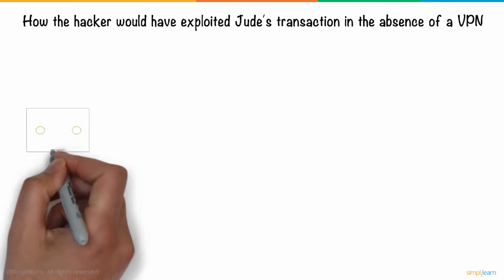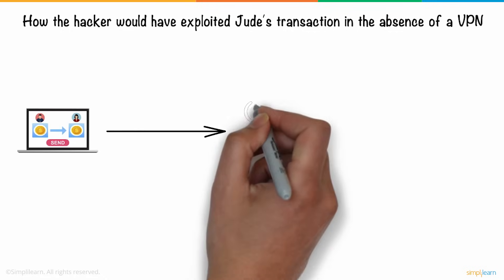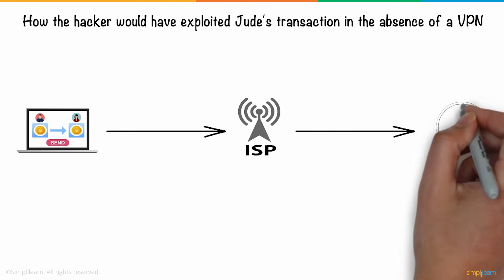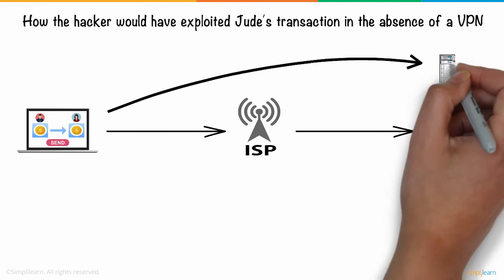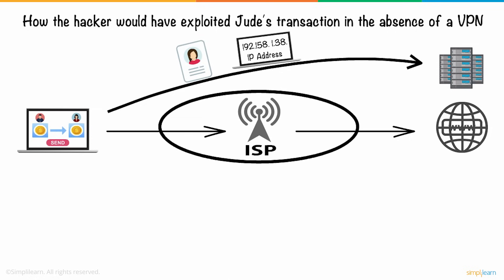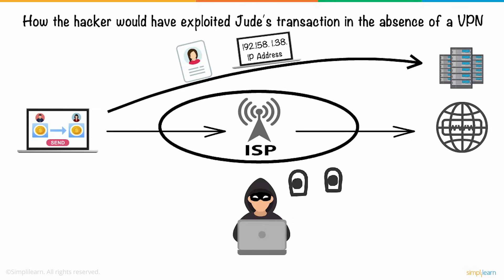In this process, Jude's computer first connects to the internet service provider, which provides access to the internet. She sends her details to the bank's server using her IP address. An IP address, or internet protocol address, is a unique address that identifies a particular device — be it a laptop or a smartphone — on the internet. When these details pass through the public network, the hacker, who passively watches the network traffic, intercepts it.